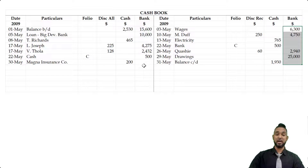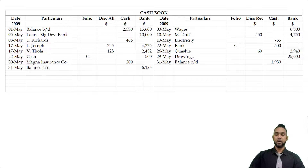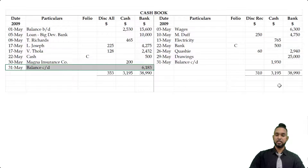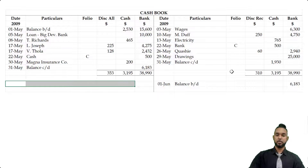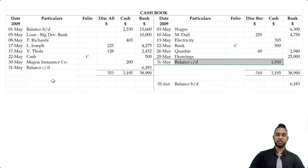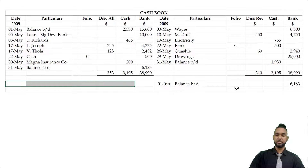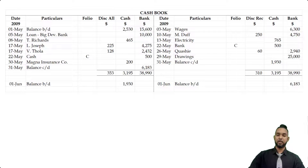Since more money went out of the bank than came in, the balance is carried down from the credit side — meaning it's an overdraft. The balance carried down from the credit side is brought down on the debit side. And the cash balance carried down from the debit side is brought down on the credit side. That's the completed cash book.